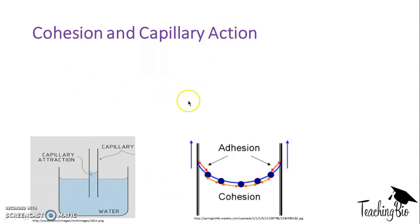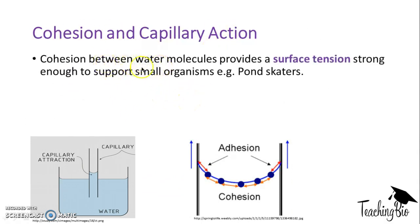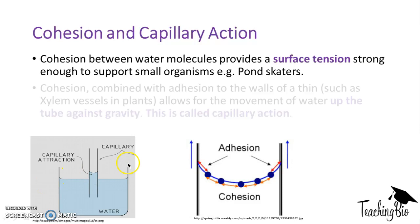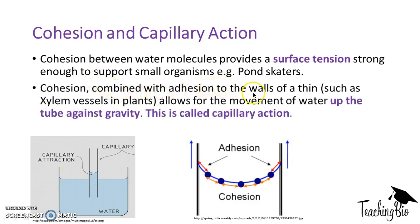Looking at cohesion and capillary action in more detail: cohesion between water molecules provides a surface tension strong enough to support small organisms, for example pond skaters. Pond skaters, as the name suggests, can skate over ponds because of the high surface tension at the surface of water. Cohesion combined with adhesion to the walls of thin tubes — for example xylem vessels in plants — allows for the movement of water up the tube against gravity, and that's capillary action. Cohesion is the sticking of water molecules together, and adhesion is the sticking of one substance to a different substance.